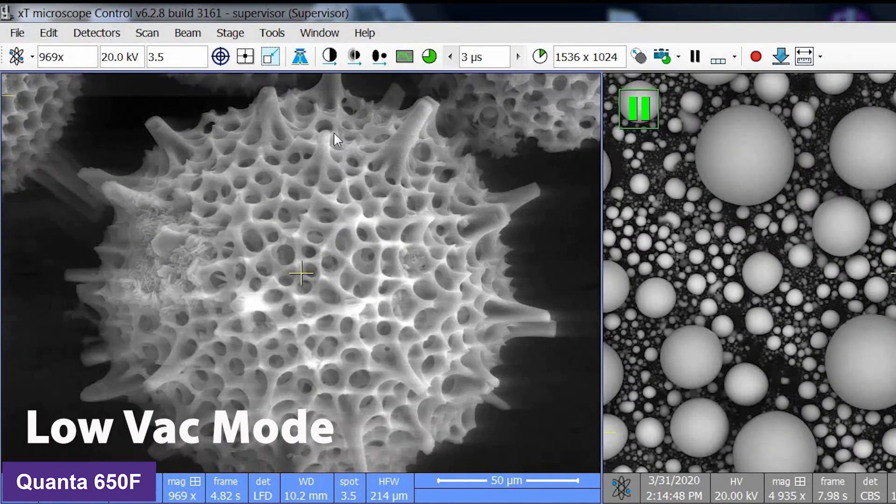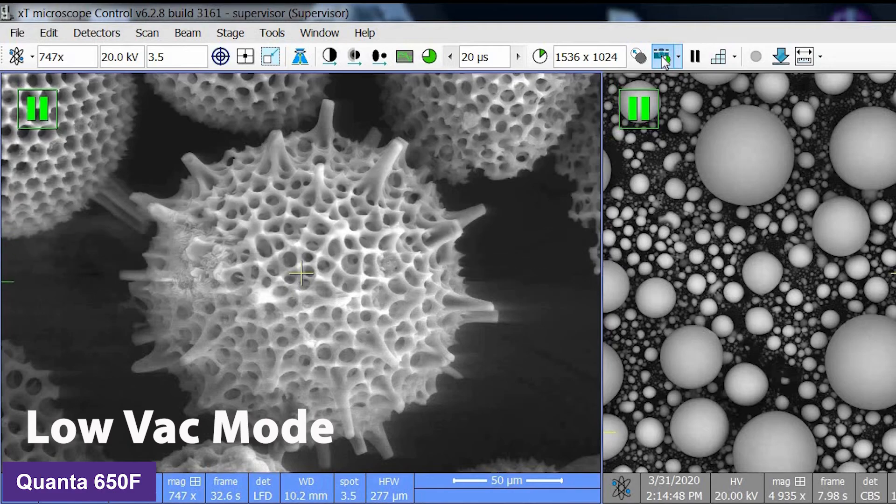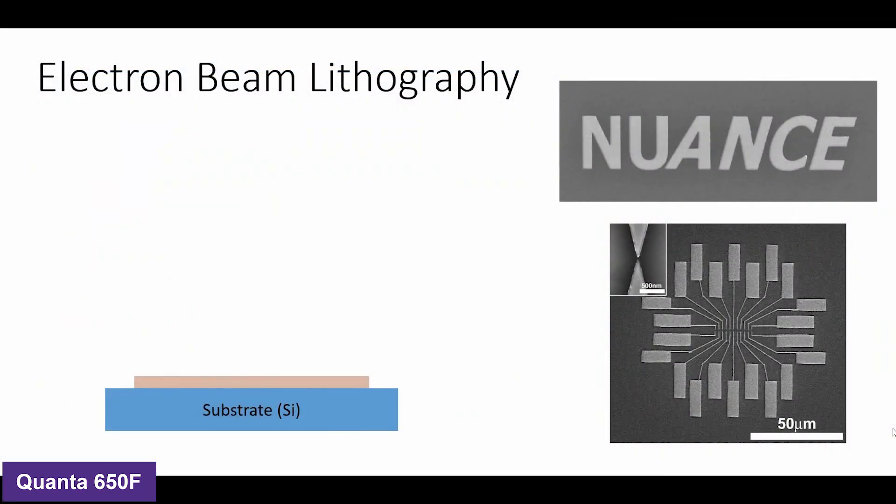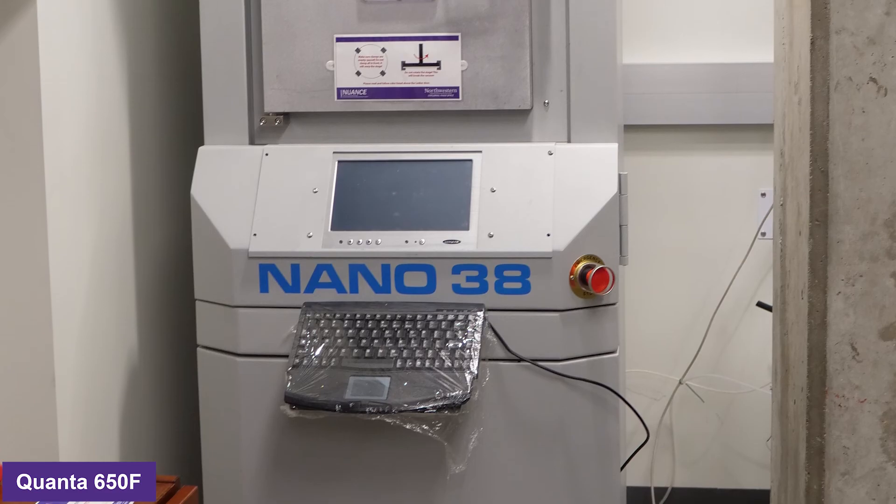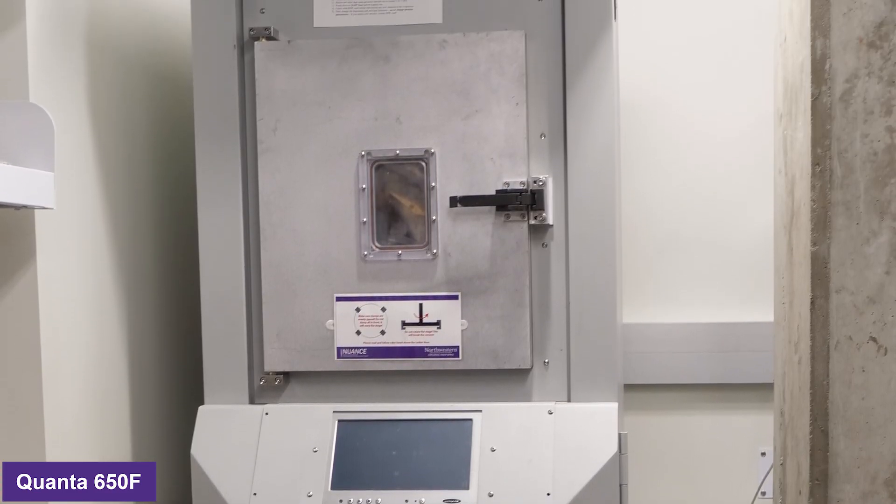This SEM also has low vacuum mode for imaging non-conductive samples and an electron beam lithography system. EBL is a technique used to create microelectrical devices by scanning the focused electron beam in a pattern to create custom shapes in a substrate coated with an electron-sensitive film. The EPIC lab also has a metal evaporator that can be used as part of this process.